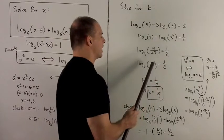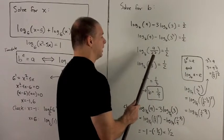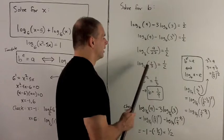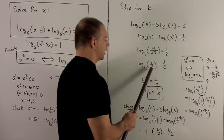So expand that to 27, then I have log base b of 9 over 27 equals 1/2. I could crunch that down even further to 1/3, and now I'm ready to translate.